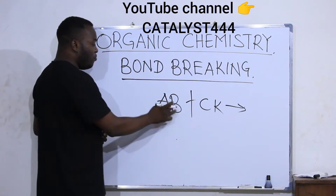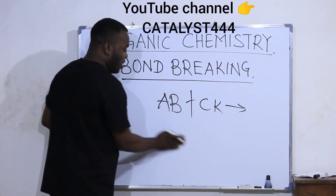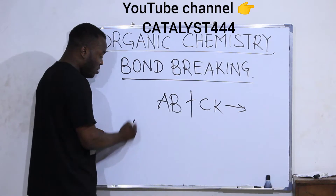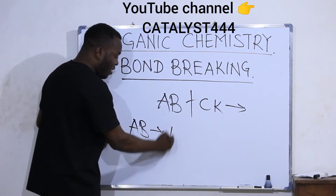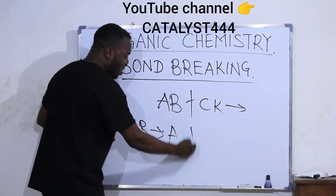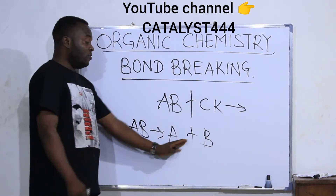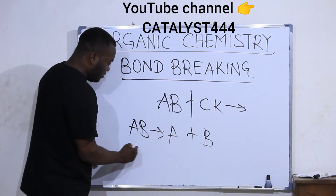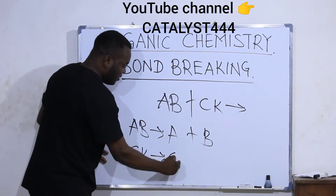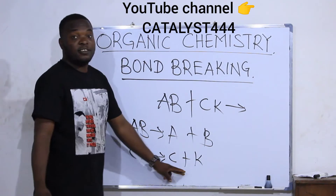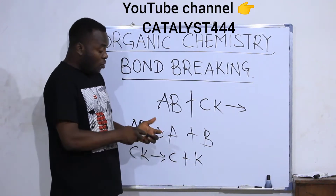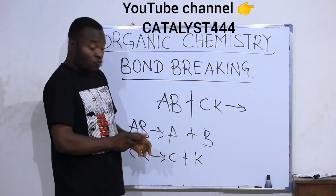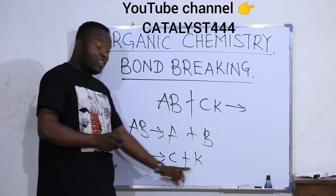By the time this bond and the other are broken — if the bond between A and B breaks, you have A plus B set aside. If the other breaks, you will have C and K set aside. Now, the A which is free can react with the appropriate portion of C and K.